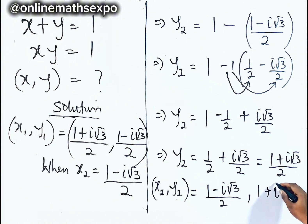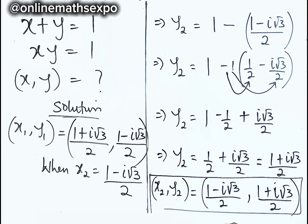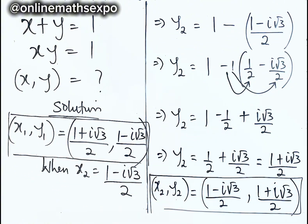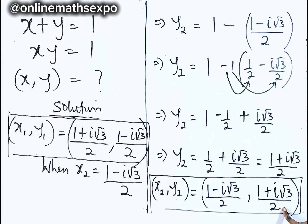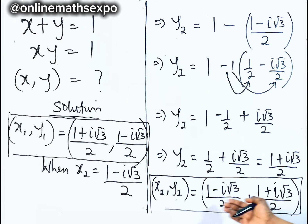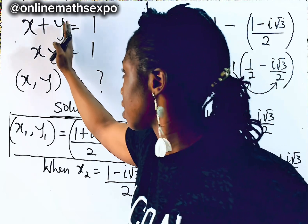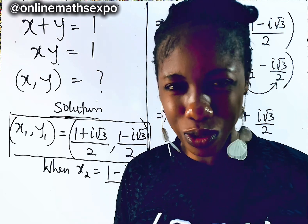So this is what we have. What did you observe? Look at our first set: the first value of x is our second value of y, and the first value of y is our second value of x. So the two sets are the same. We are going to do a check with one of them to see if we plug them in, do they give us back 1?